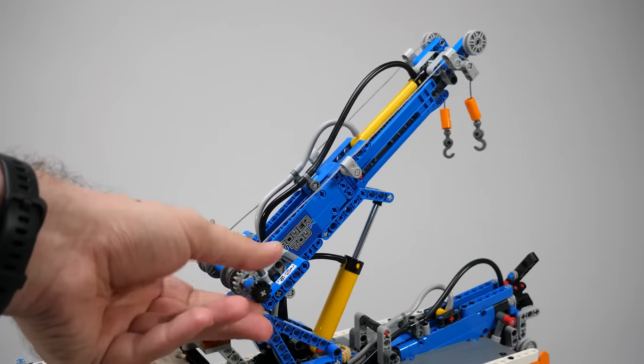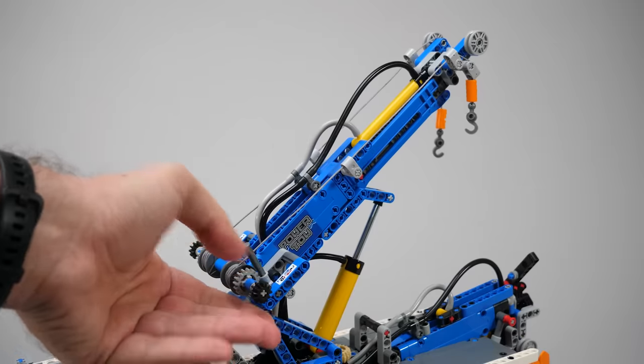The dual winches are also operated manually. There's a ratchet mechanism holding them in place.